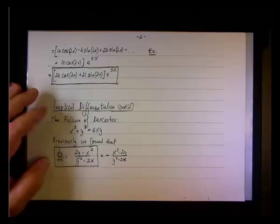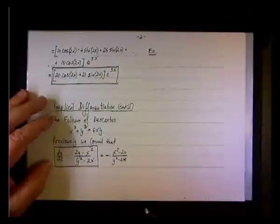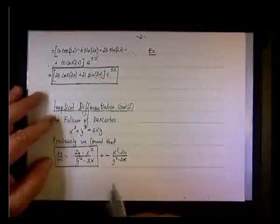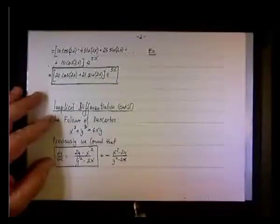All right, I'll record it. So given the folium of Descartes, find the equation of the tangent to the curve at x, y equals 3, 3.